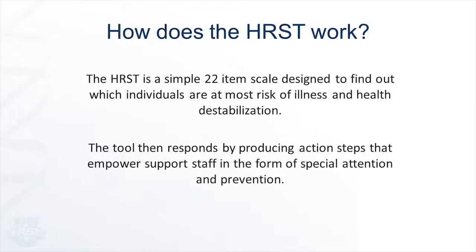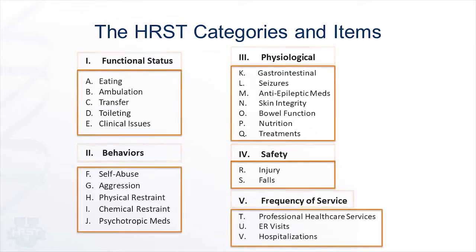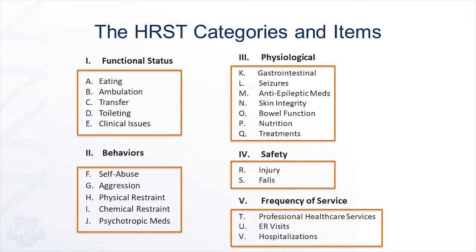The HRST is designed with simplicity in mind. It consists of 22 rating items and a rating scale aimed at finding out where the individual is experiencing health risk and destabilization. Once a score has been assigned to each of the 22 rating items, the tool produces action steps for the team to consider. Here are the 22 rating items found in the HRST. They are divided into five categories: functional, behavior, physiological, safety, and frequency of services.